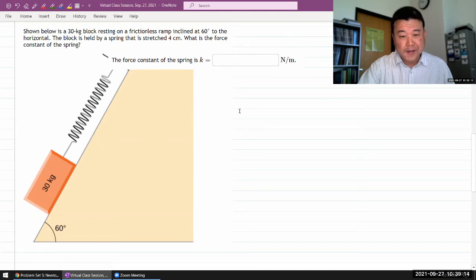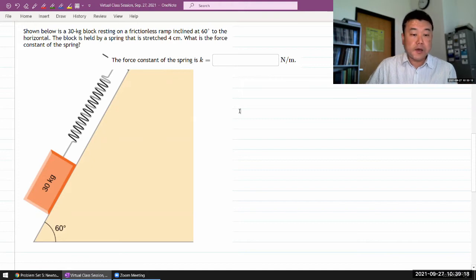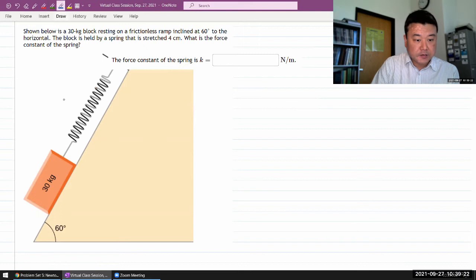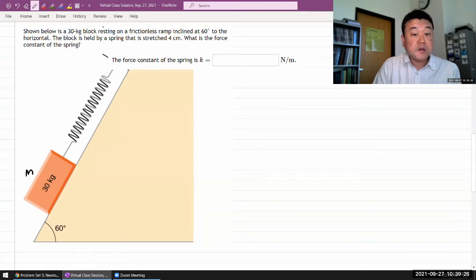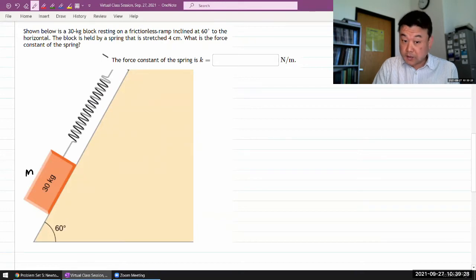This is the setup: you have some block resting on a frictionless ramp inclined at some angle beta to the horizontal.